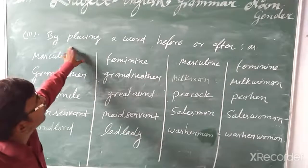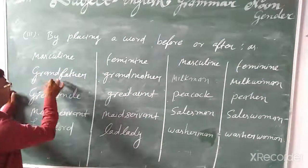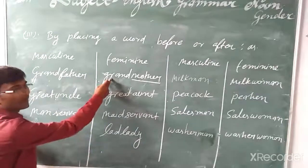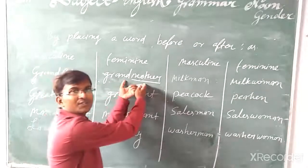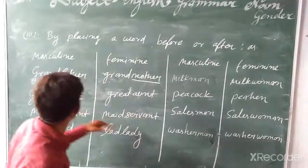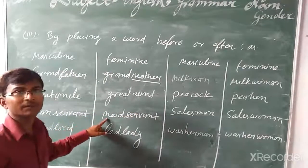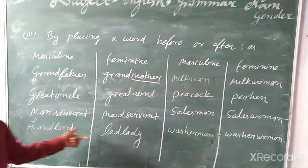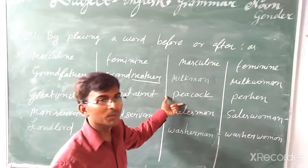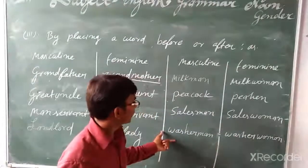Now the third method. By changing part of a compound word: 'grandfather' becomes 'grandmother'. 'Great uncle' becomes 'great aunt'. 'Man servant' becomes 'maid servant'. 'Landlord' becomes 'landlady'. 'Milkman' becomes 'milkwoman'. 'Peacock' becomes 'peahen'. 'Salesman' becomes 'saleswoman'. 'Washerman' becomes 'washerwoman'.